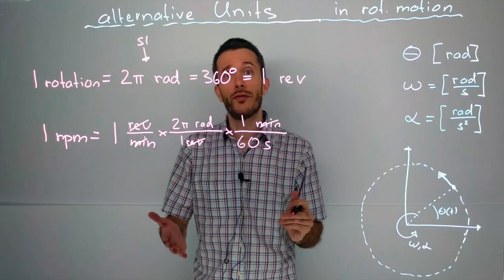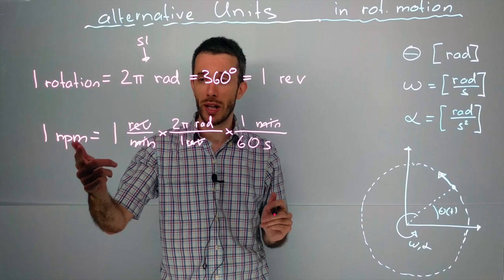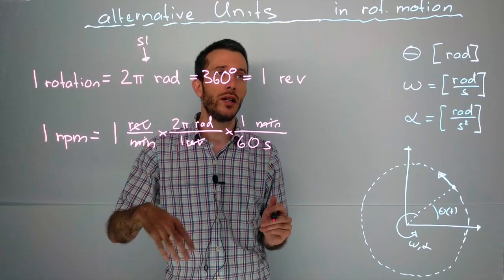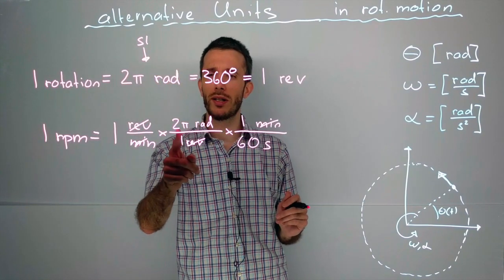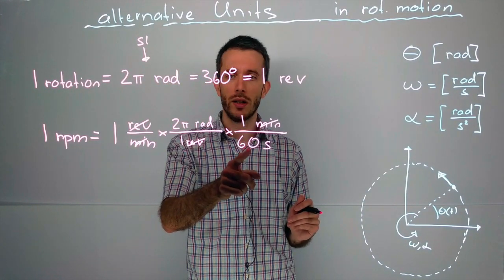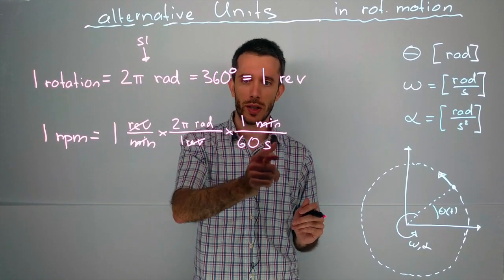So in the end, if you need to go from RPM, revolutions per minute, into radians per second, your SI standard units, you multiply this by 2π and you divide it by 60 and you will get radians per second.